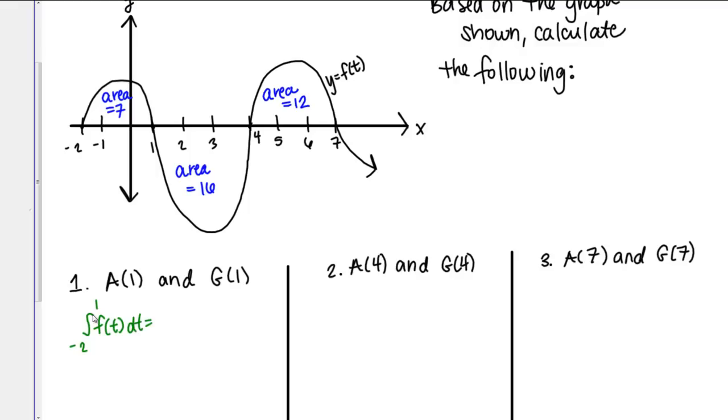Remember that notation, once again, is asking for the net area bounded by the curve on that interval. If I look at my picture from negative 2 to 1, the net area there is just 7. The area bounded by the curve there is 7.